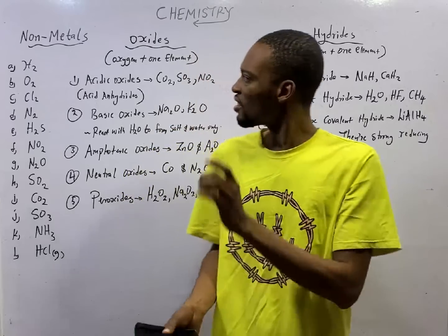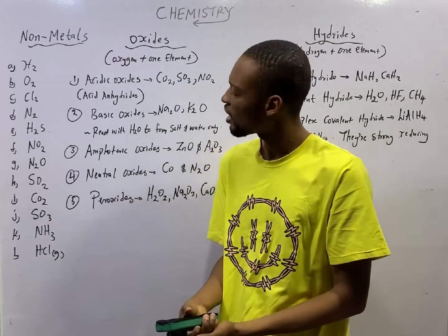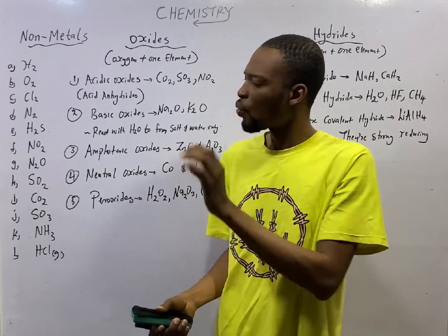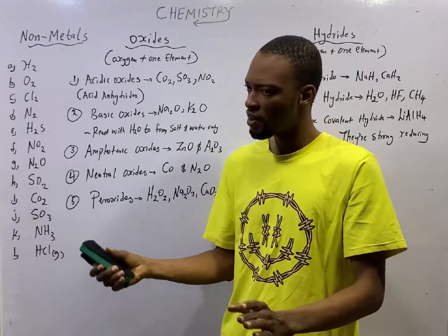Now that we know that oxygen plus one other element equals oxides and hydrogen plus one other element equals hydrides, what are the types of oxides and what are the types of hydrides?